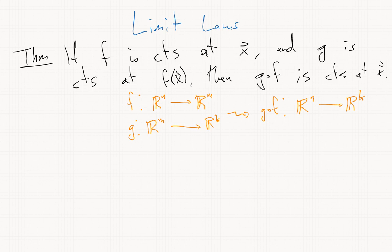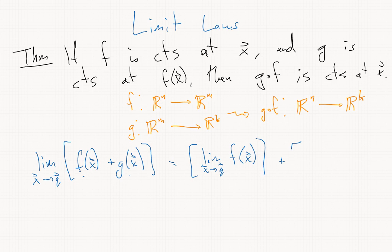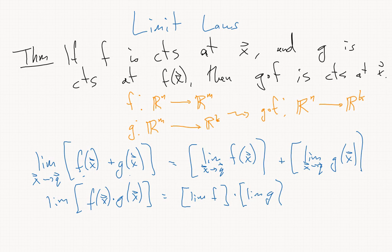The limit laws say things like limit as x goes to q of f(x) + g(x), assuming the limits of both f and g exist, is the limit of f plus the limit of g. There's similar rules for products or the dot product if these had vector outputs.